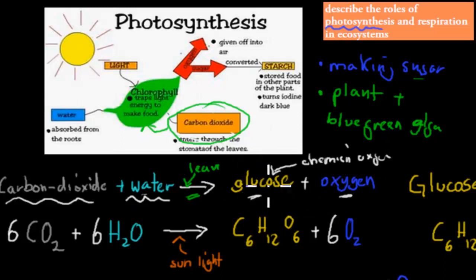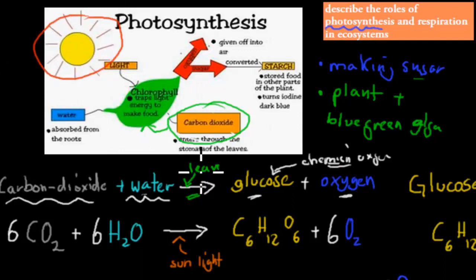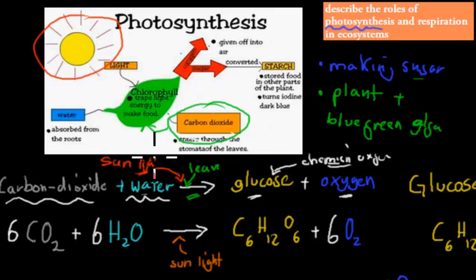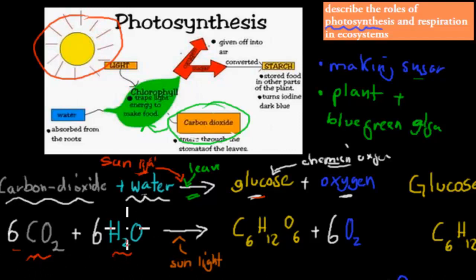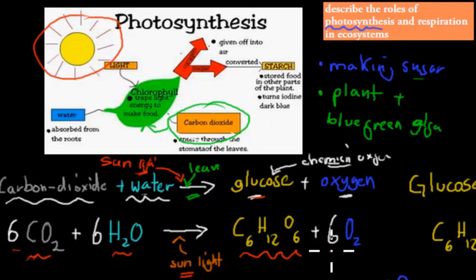One thing I left out is: where does the energy come from to drive this reaction? The energy comes from the sun — the plant uses sunlight and traps it in the form of glucose. So the chemical equation is: six molecules of CO2 and six molecules of H2O, in the presence of the leaf and energy from the sun, produces glucose (C6H12O6) and oxygen. That is the equation for photosynthesis.